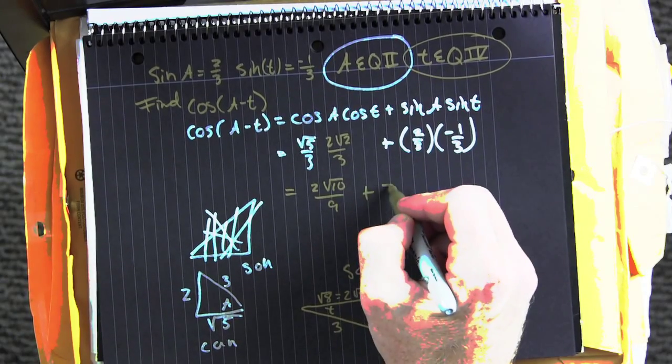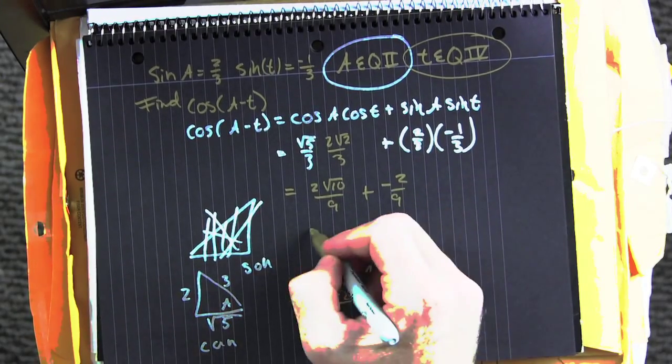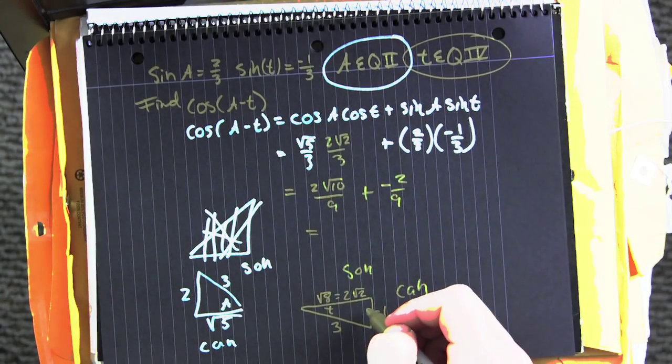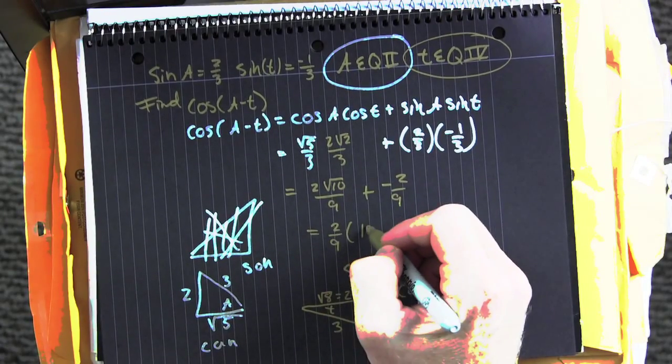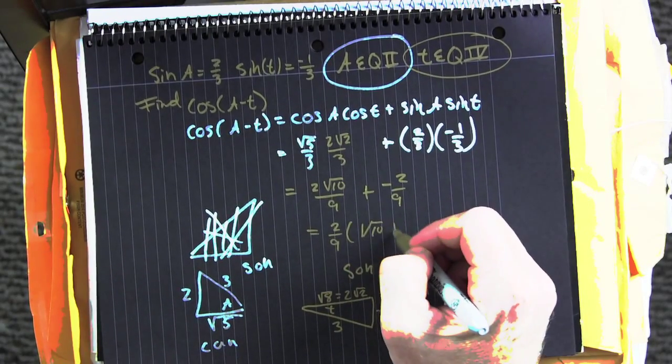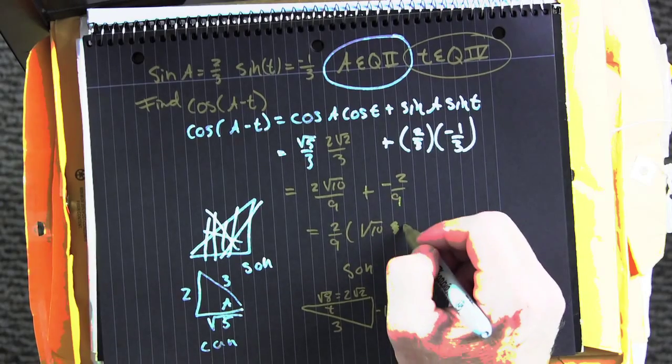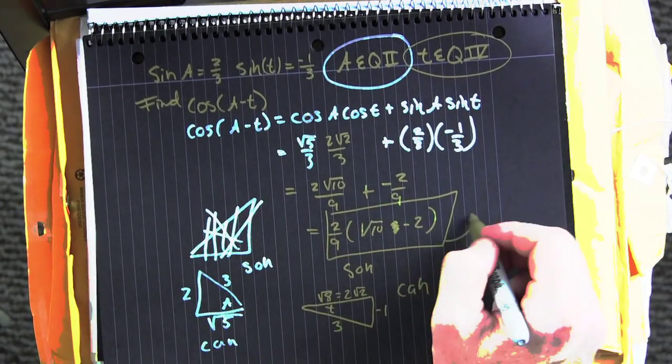They're still bothering me about that sine. Okay, so you're taking care of those fractions. Now factor out the common factor. Ha, you were so concerned you missed that, didn't you?